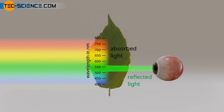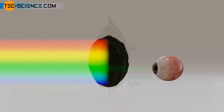Thus the reflected light contains exactly the wavelength range that gives us the green color impression. If an object absorbs all incident wavelengths of the visible light, then obviously no visible radiation is reflected. The object appears black under normal conditions, as is the case with charcoal. A black object therefore does not emit any visible radiation. An object that absorbs all incident radiation is therefore also called a blackbody.